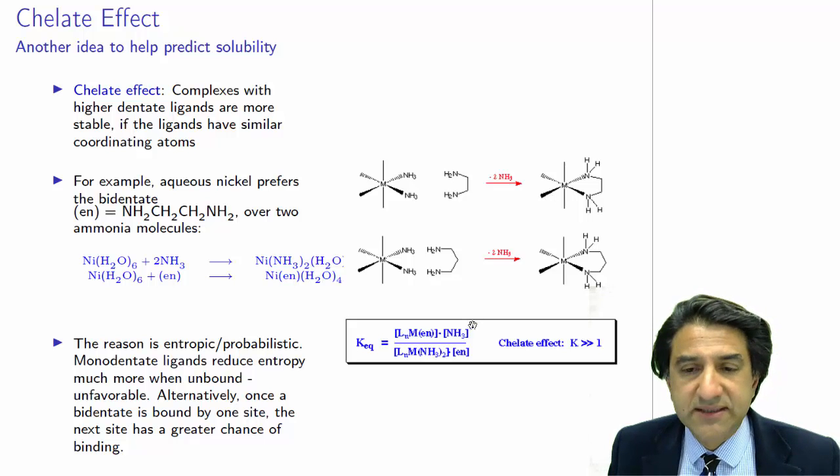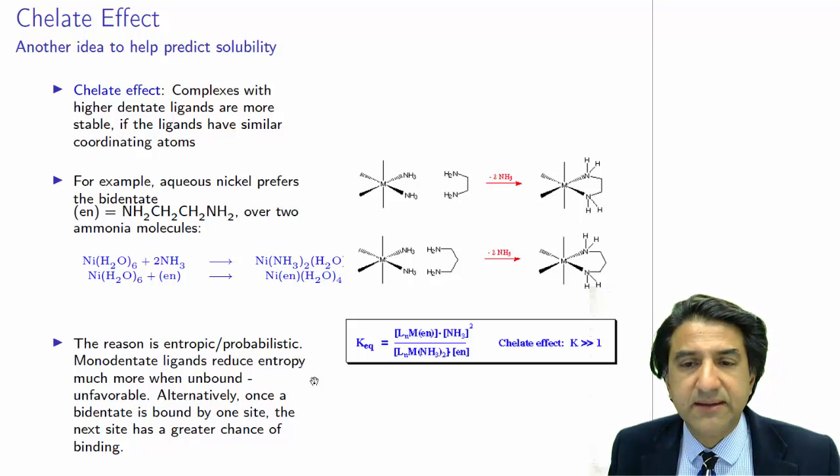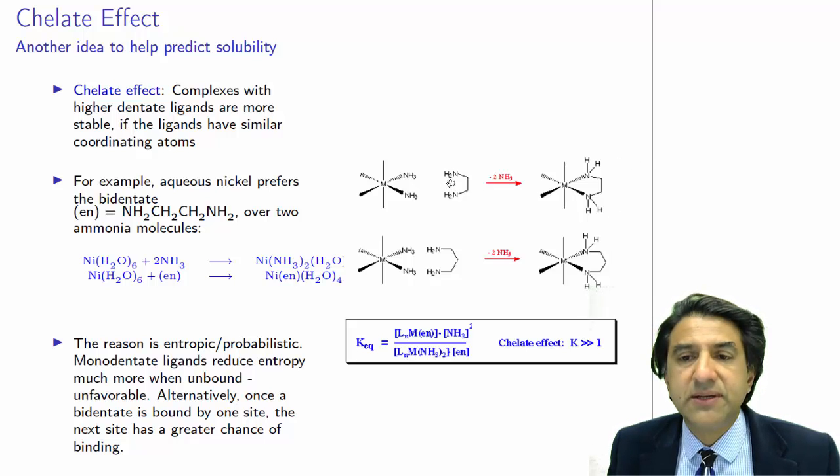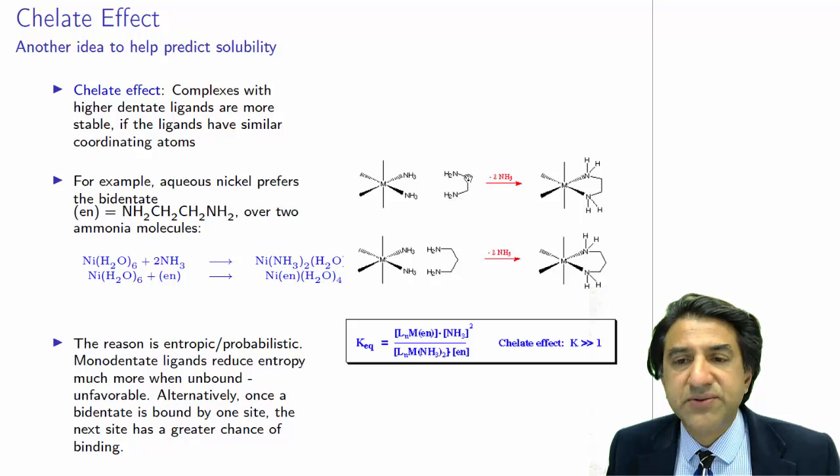So we have three ways of understanding. The K constant, the fact that entropy increases because we're ejecting a whole lot of different particles in which energy can be distributed, and the probability increase of attaching one nitrogen once the other ligand end is connected.